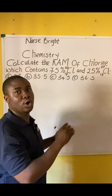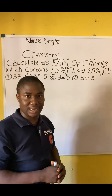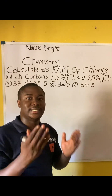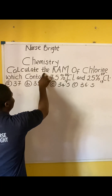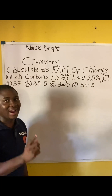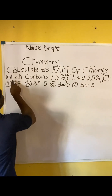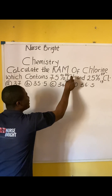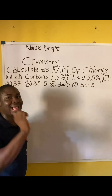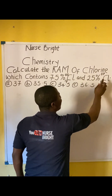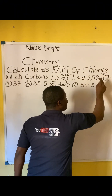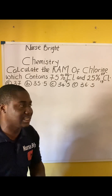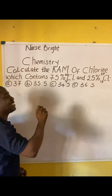You came across this question in your chemistry exam — how will you answer it? It is very easy. The question says: calculate the RAM of chlorine which contains 75% Cl-35-17 and 25% Cl-37-17. Relax, this question is extremely easy.